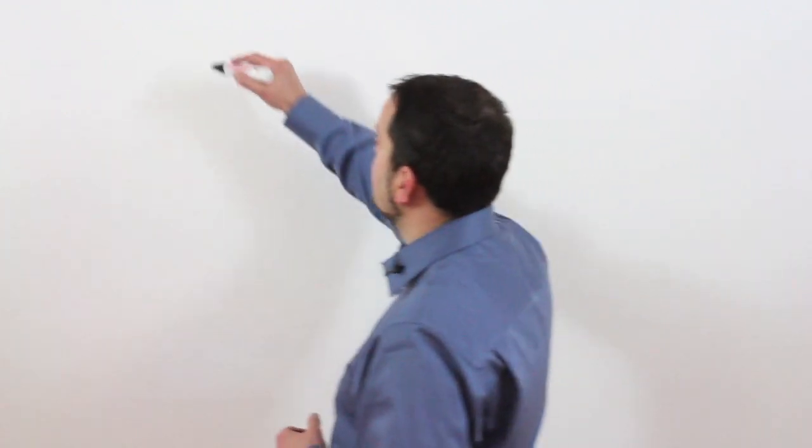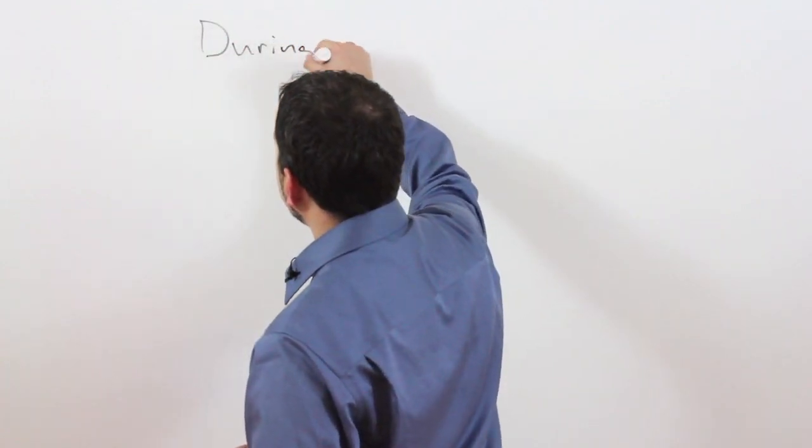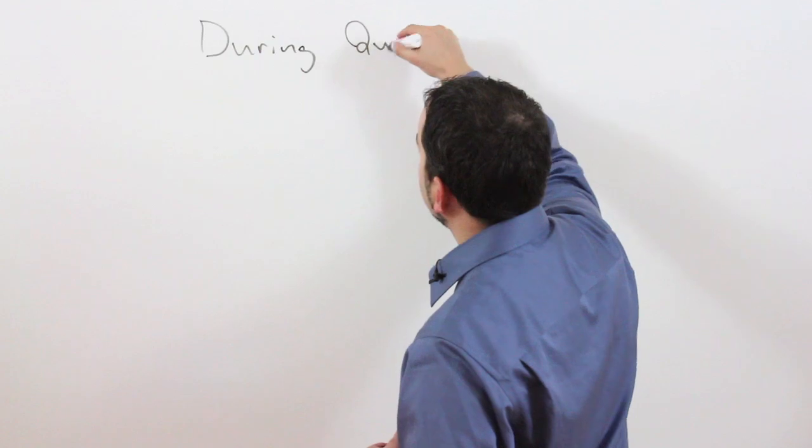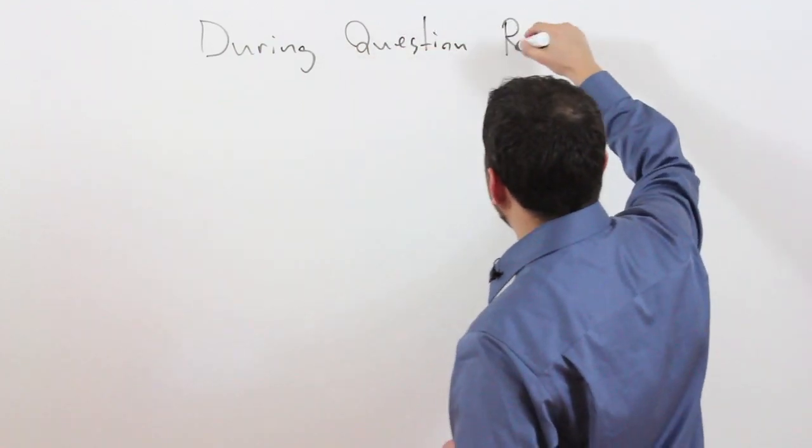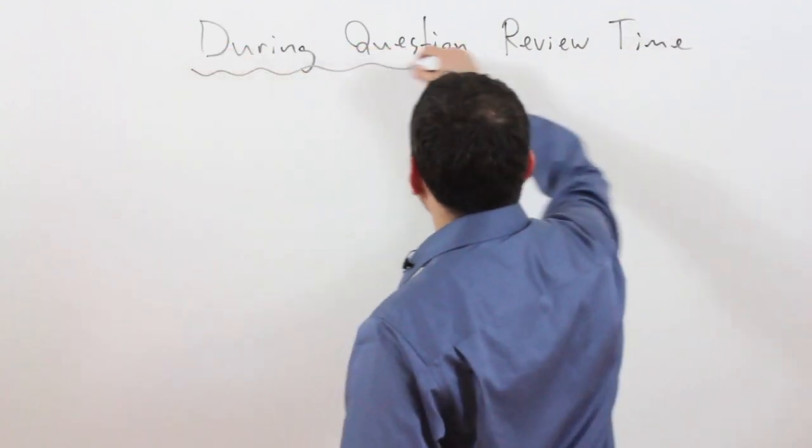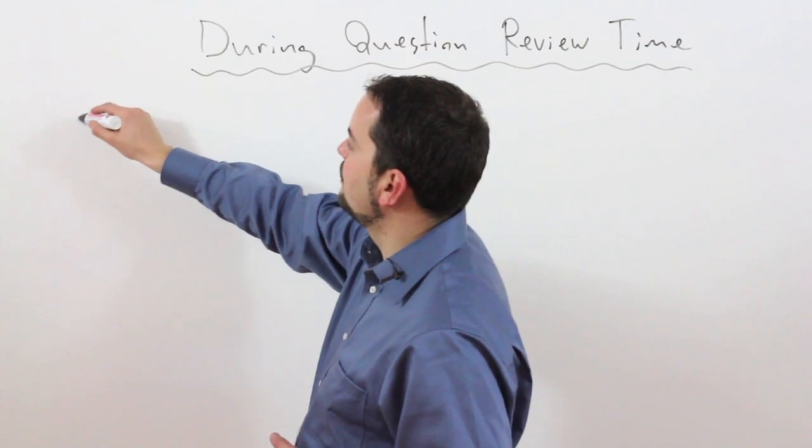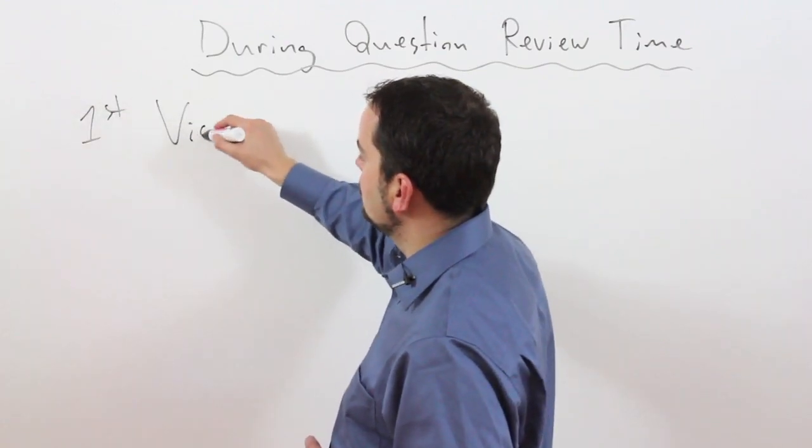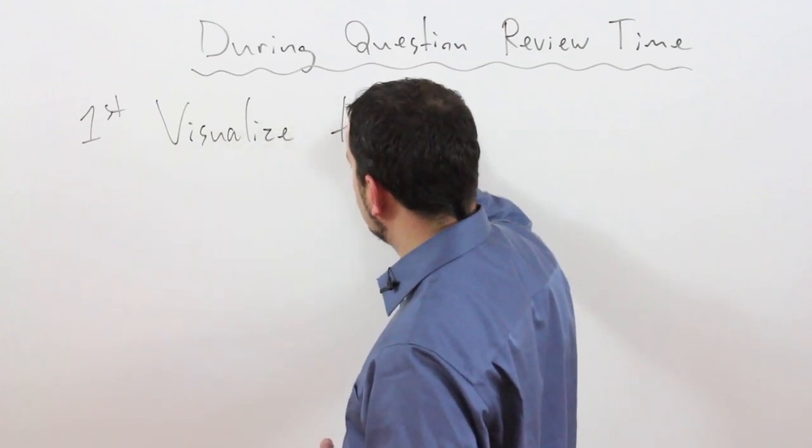Okay, so during the few seconds that you have to review the section questions, the first step that you need to do is you need to try to visualize the topic. This will help prepare your brain for the information that's coming. So during question review time, the first step that you need to take is visualize the topic.